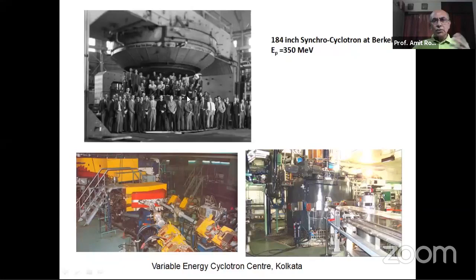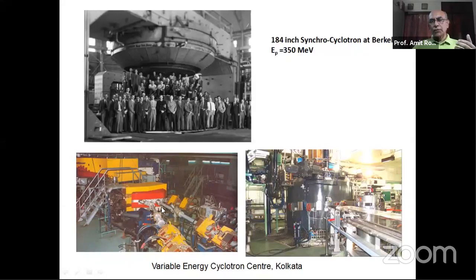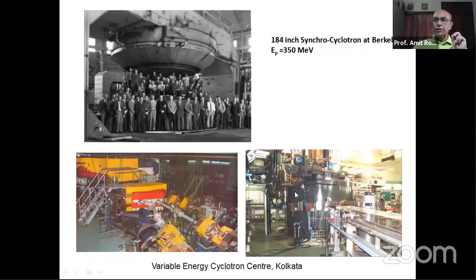Similar cyclotrons exist in our country. At the Variable Energy Cyclotron Center in Kolkata, we have a large cyclotron with an 88-inch (more than seven-foot) diameter. Particles are accelerated and directed through vacuum tubes to different experimental areas where people can do experiments simultaneously. The cyclotron center has also built a superconducting cyclotron, which can accelerate particles to 500–600 MeV for nuclear physics studies.